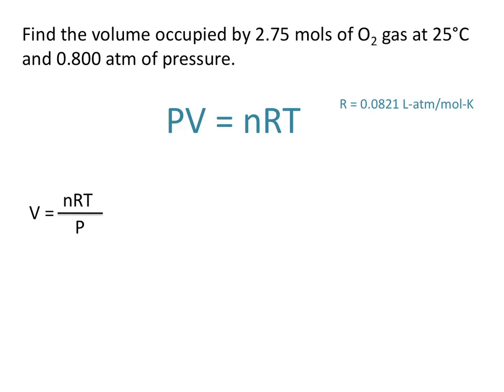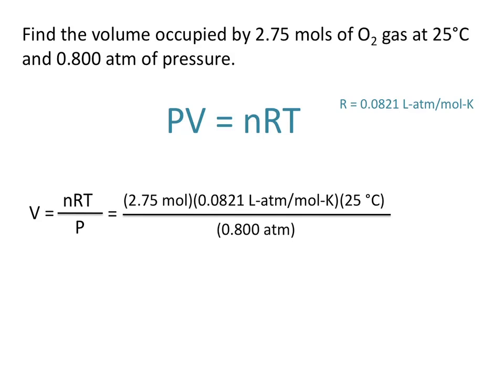Let's go ahead and start plugging in our values. N, the number of moles, is 2.75 moles, times R, the ideal gas constant, times the temperature, 25 degrees Celsius, divided by the pressure, 0.8 atmospheres.